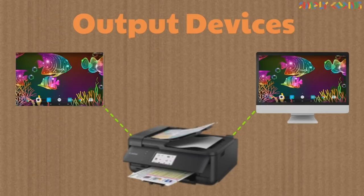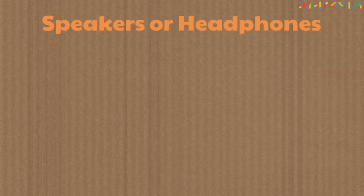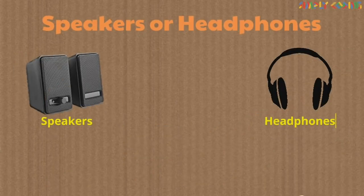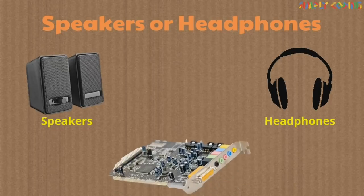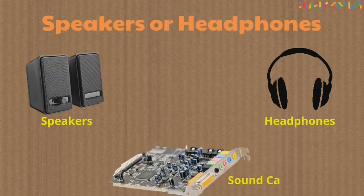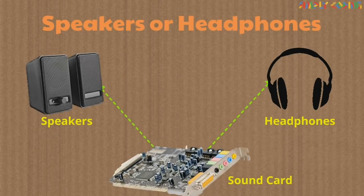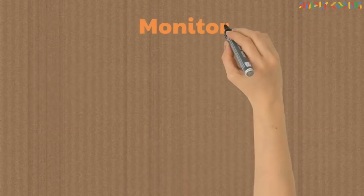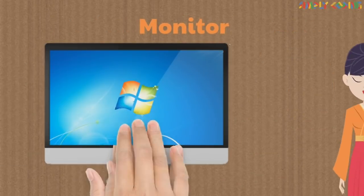Let's look at some common output devices. Speakers or headphones are most commonly used to listen to songs and sounds in a computer. They are connected to the sound card and convert electric current to sound format.